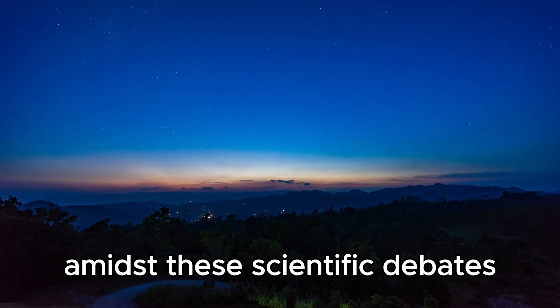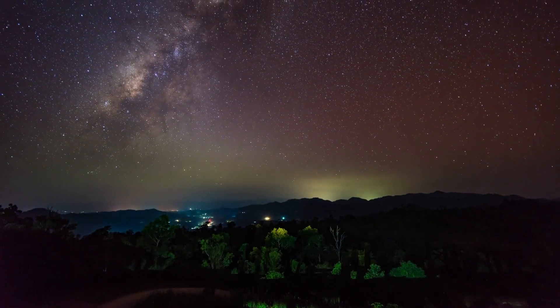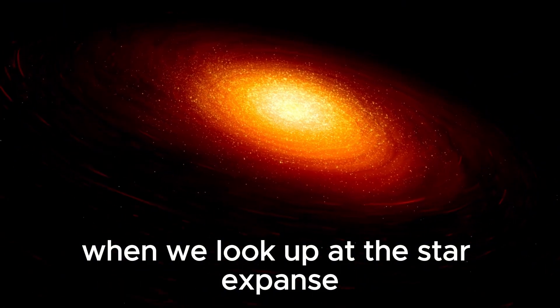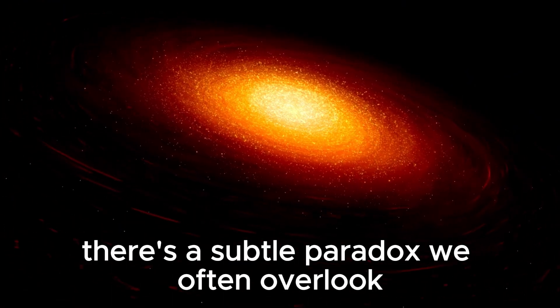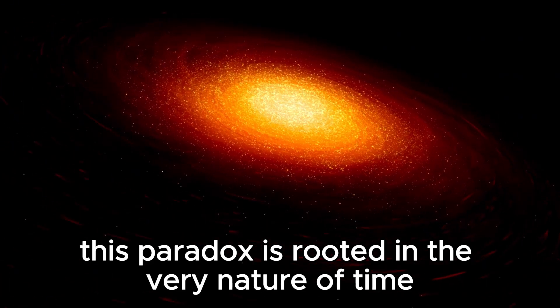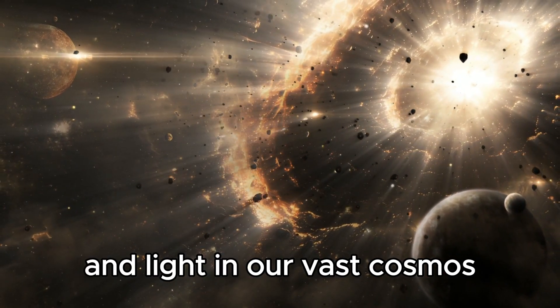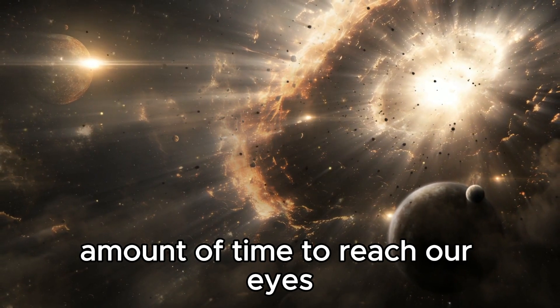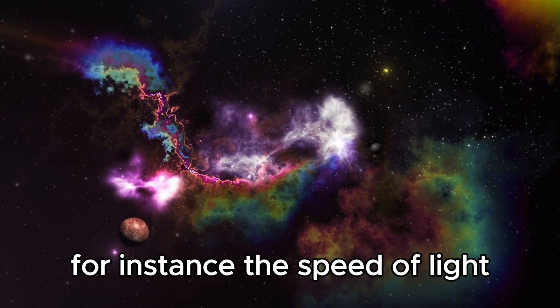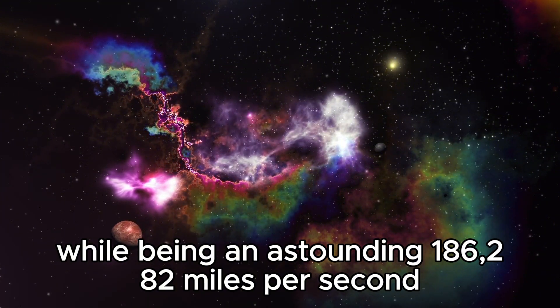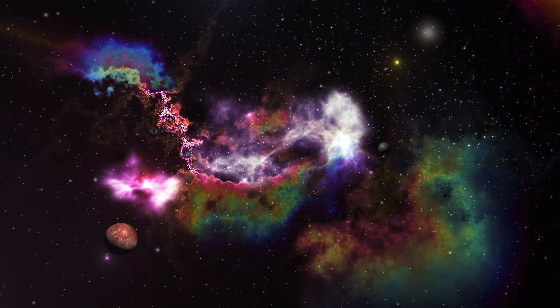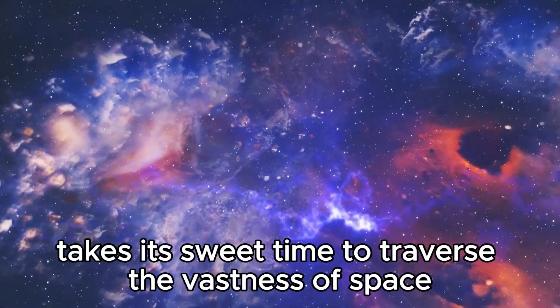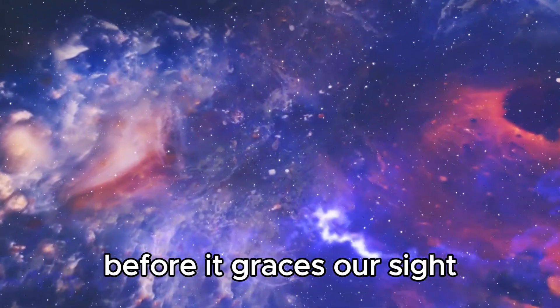Amidst these scientific debates and speculations about Betelgeuse's fate, one fact remains unchallenged, the very nature of our observation. When we look up at the star expanse, there's a subtle paradox we often overlook. This paradox is rooted in the very nature of time and light in our vast cosmos. Stars and celestial bodies are so distant that their light takes a momentous amount of time to reach our eyes. For instance, the speed of light, while being an astounding 186,282 miles per second, still has its constraints. Consequently, the light from remote stars and galaxies takes its sweet time to traverse the vastness of space before it graces our sight.